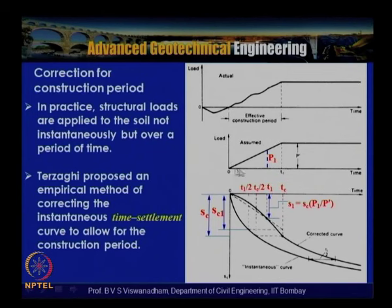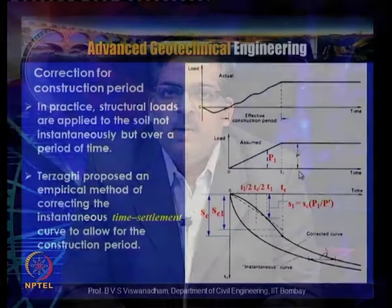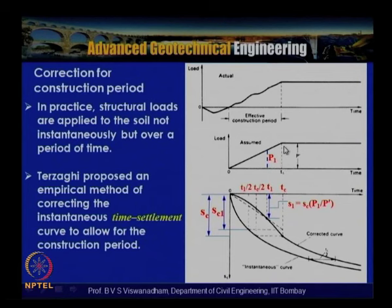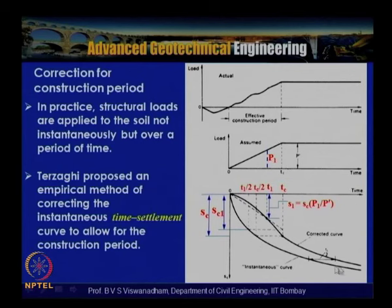In a load versus time diagram, Tc is the time required for construction — say 6 months or 1 year in the field — the time required to construct an embankment of h meters height. If the embankment causes a pressure of P-dash, then Tc is the construction period. As per Terzaghi's theory of one-dimensional consolidation, the load is assumed to be placed instantaneously.